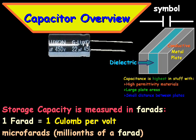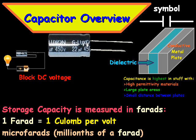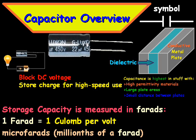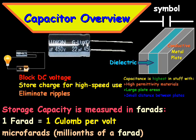To recap: a capacitor is used to block direct current voltage. It stores charge for high-speed use such as flash cameras. It can also eliminate ripples or spikes in current by absorbing the peaks and filling in the shortages. That wraps up our brief overview of capacitors — thank you for watching.